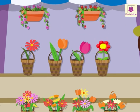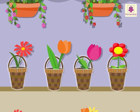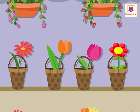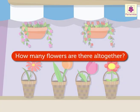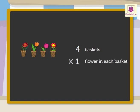Look! There are four flower baskets here. Each basket contains one flower in it. How many flowers are there altogether? Here there are four baskets and one flower in each. Now, four into one is equal to four.